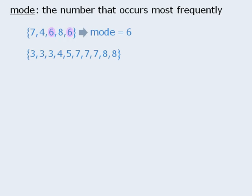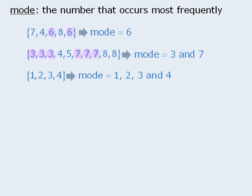In this set of numbers, we have a tie for the most frequently occurring number. The 3s occur three times, and the 7s occur three times. So the mode here is 3 and 7. Finally, in this set, each number occurs once. So the mode here is 1, 2, 3, and 4.